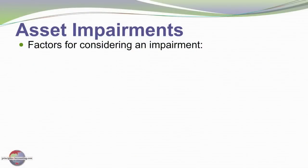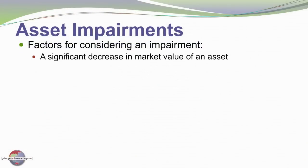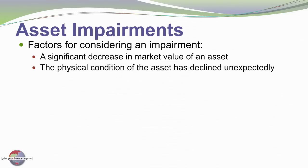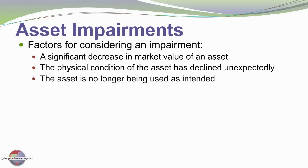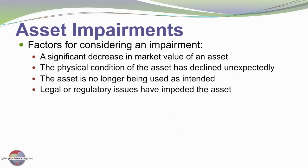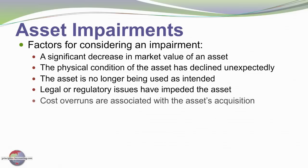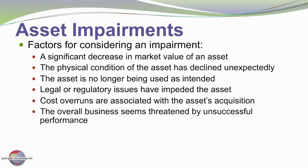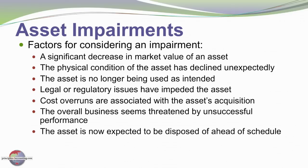Factors that would be considered in determining whether an impairment has occurred include: there has been a significant decrease in the market value of an asset; the physical condition of the asset has deteriorated unexpectedly; the asset is no longer being used as intended; legal or regulatory issues have impeded the asset in some way; there may be cost overruns associated with the asset's acquisition; the overall business performance seems threatened by unsuccessful performance; or finally, the asset is now expected to be disposed of ahead of the anticipated schedule.